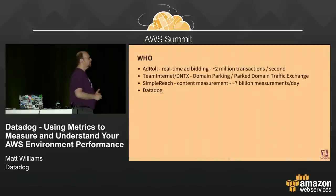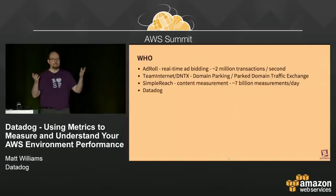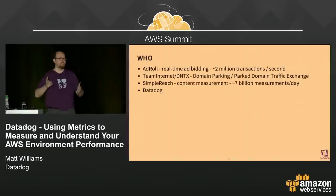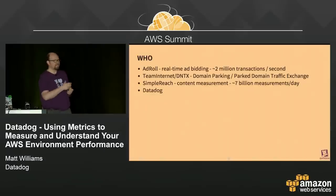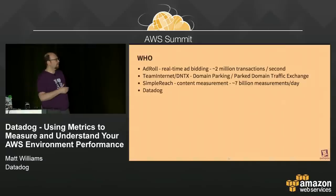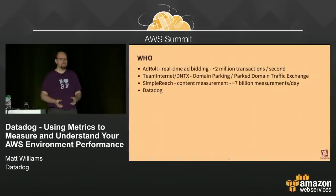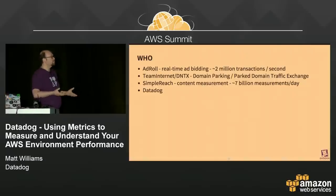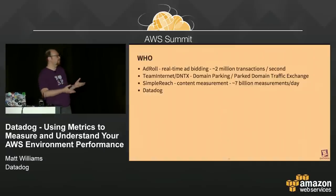Another customer I talked to was SimpleReach — all about content measurement. A big publisher produces all sorts of content every day and wants to understand what are the best articles to push to the top. It's not just about page views; there's also social media and what's being shared the most. They're trying to make about 7 billion measurements per day to make sure the best content rises to the top. Each one of these customers has different requirements in AWS and different requirements of a monitoring solution.